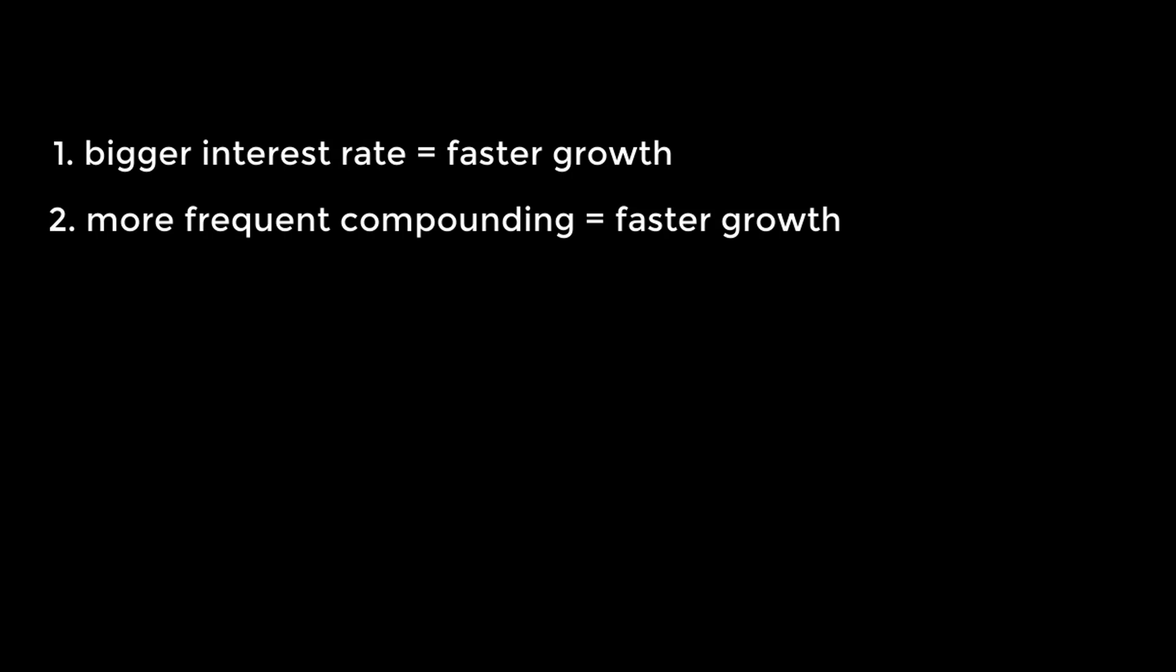It's easy to tell when the numerical value of the interest rate is bigger or smaller. For example, 10% is obviously larger than 9.75%. But it's not so obvious when they compound at different frequencies. For example, can we say with certainty that 10% compounded annually is larger than 9.75% compounded monthly without doing any math? Yeah, it's not quite as easy.